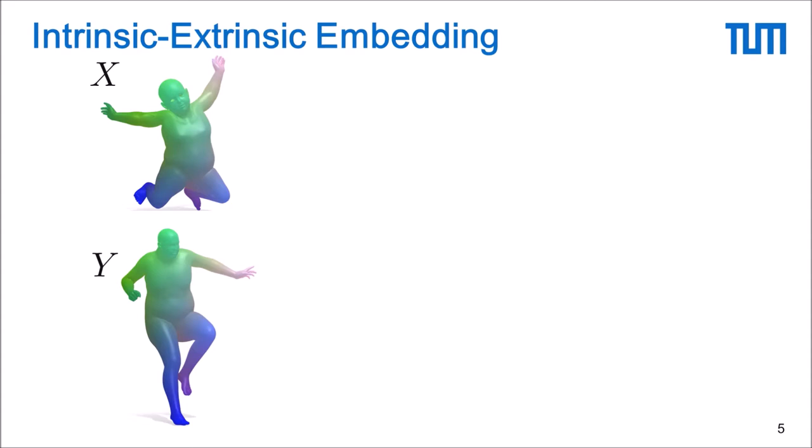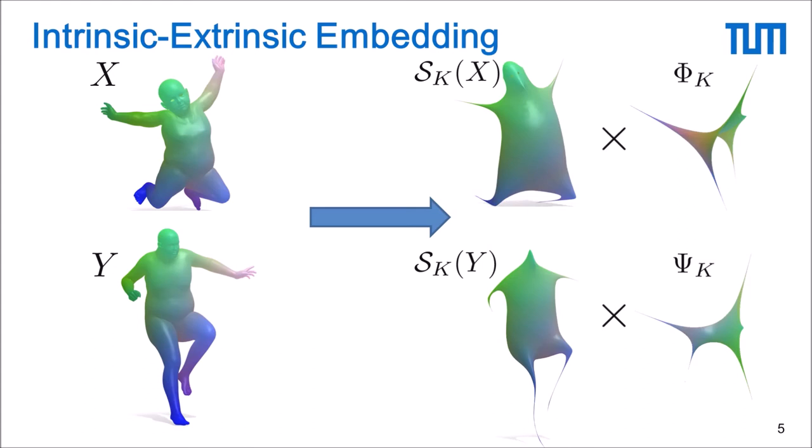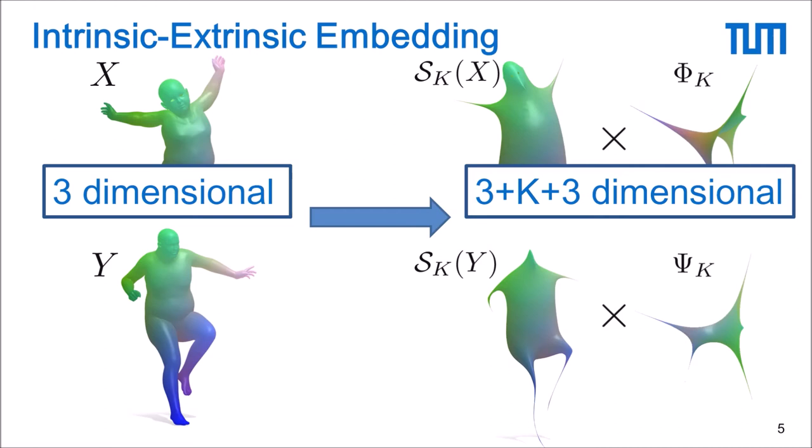In order to leverage all the information that is available to us we embed both input shapes into the product space of extrinsic features and spectral features. Like this we can combine the strength of intrinsic and extrinsic matching methods. We also use the outer normals of the shape so overall we go from a 3d embedding to a 3 plus k plus 3 dimensional embedding.